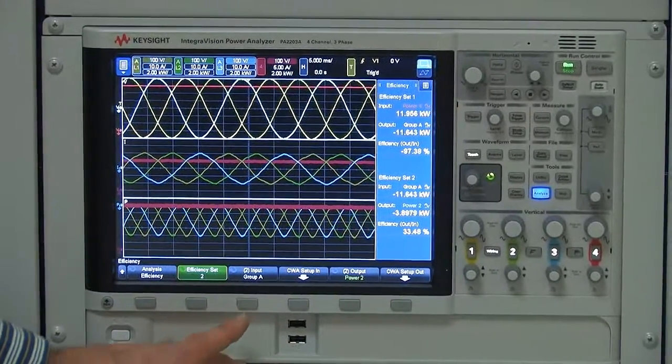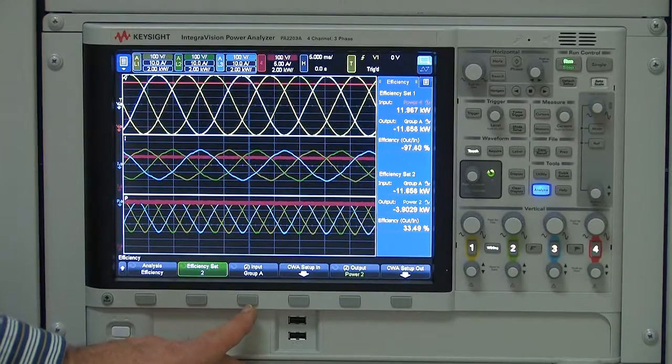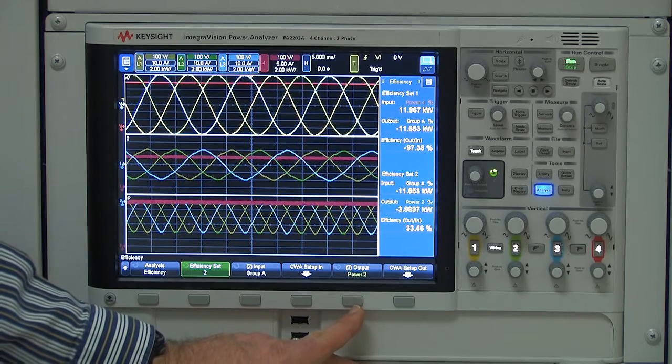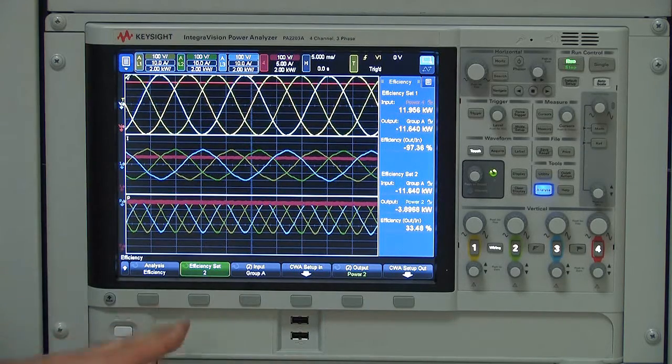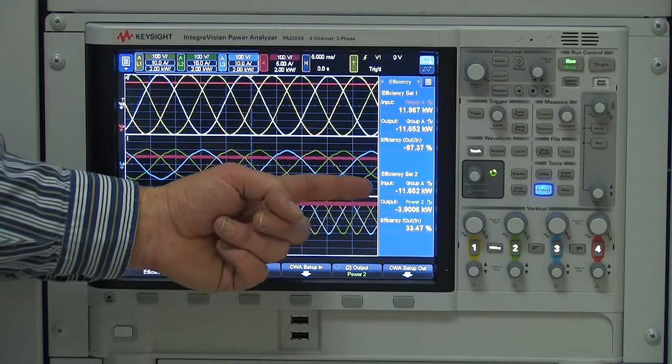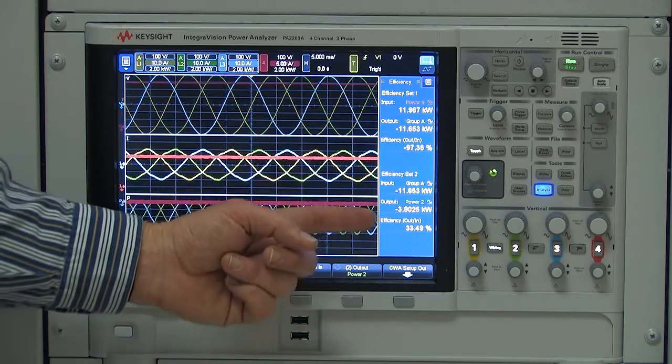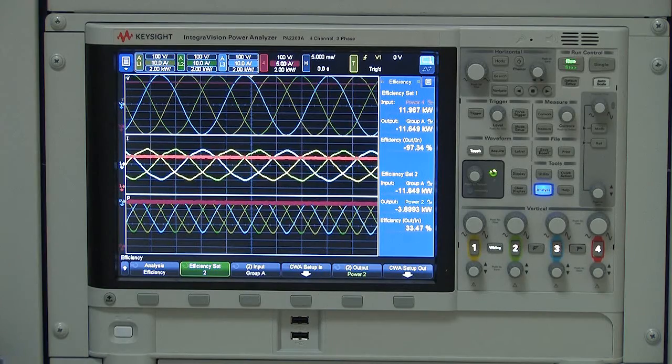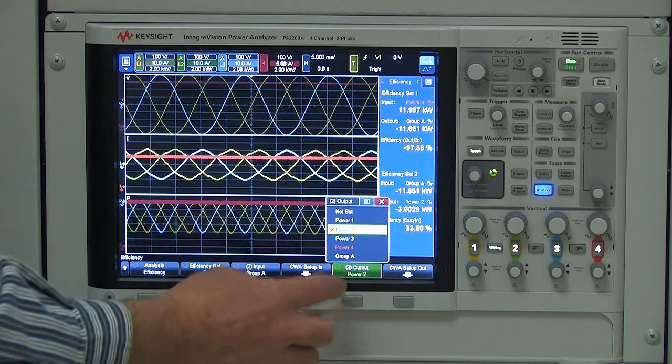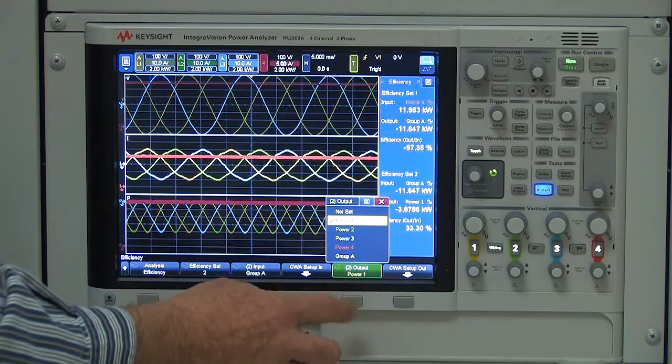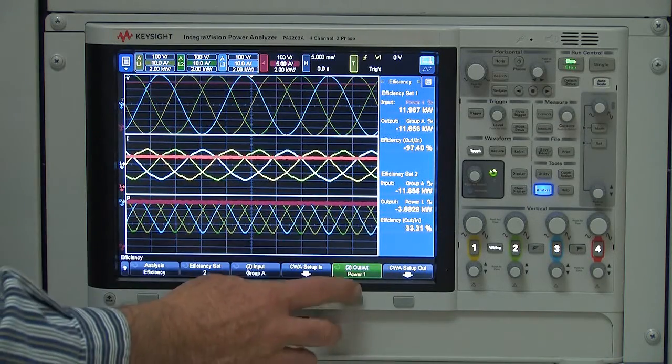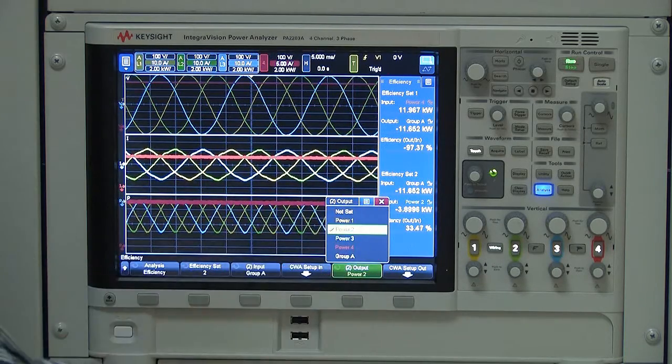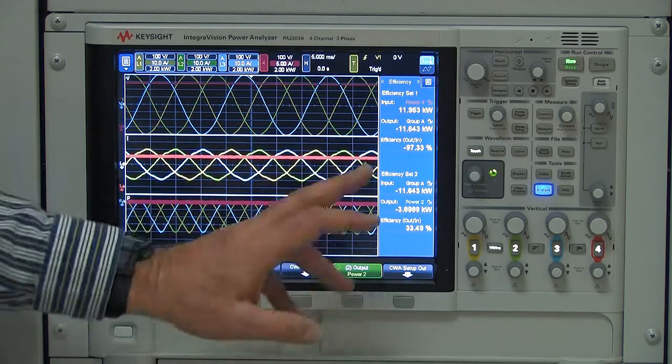In this case, I'm looking at the input being the group A total power and the output being one of the phases of the power. So we'll see how well the power is being converted on a phase-by-phase basis. And if you look at this case, minus 11.6, minus 3.9 for an efficiency of 33.45. So you can see it's being split fairly equally between the three phases. You can look at each of the phases if you'd like by scrolling through them. And again, just about exactly 33% on each one of those.